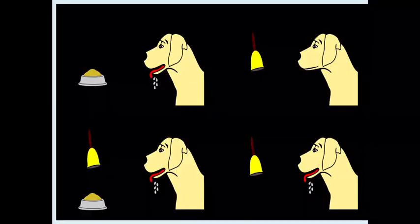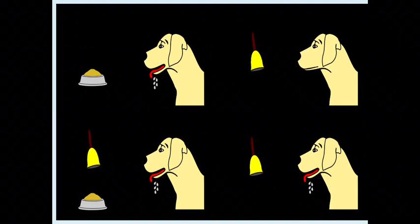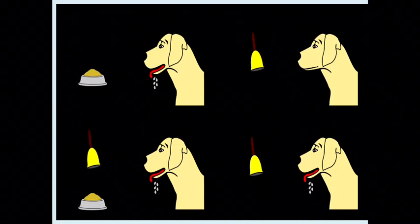In a nutshell: he started with an unconditioned stimulus — the food — which produced an unconditioned response — salivation. He also had a neutral stimulus — the sound of a ringing bell — which produced no response. During conditioning he would pair the neutral stimulus with the unconditioned stimulus, and after enough pairings, merely presenting what used to be the neutral stimulus — now the conditioned stimulus — would produce a conditioned response: salivation.